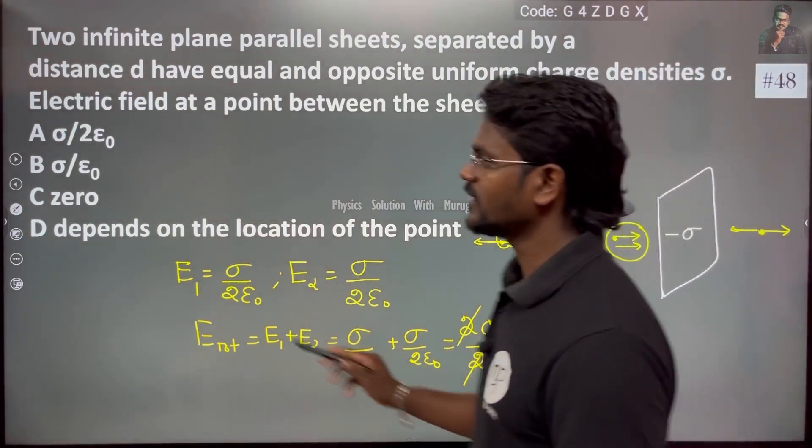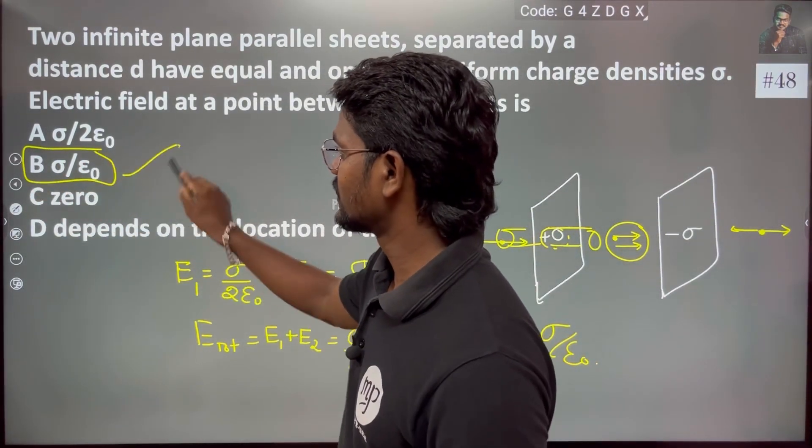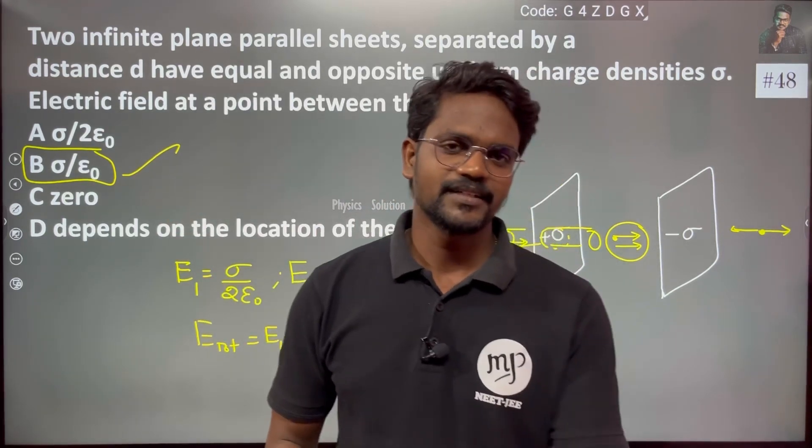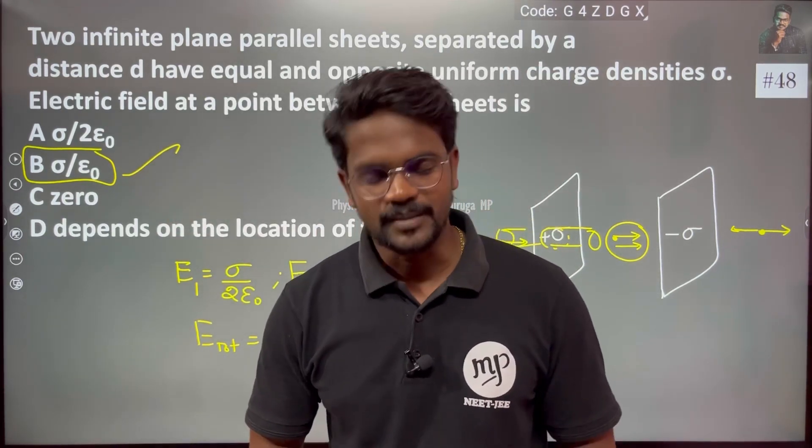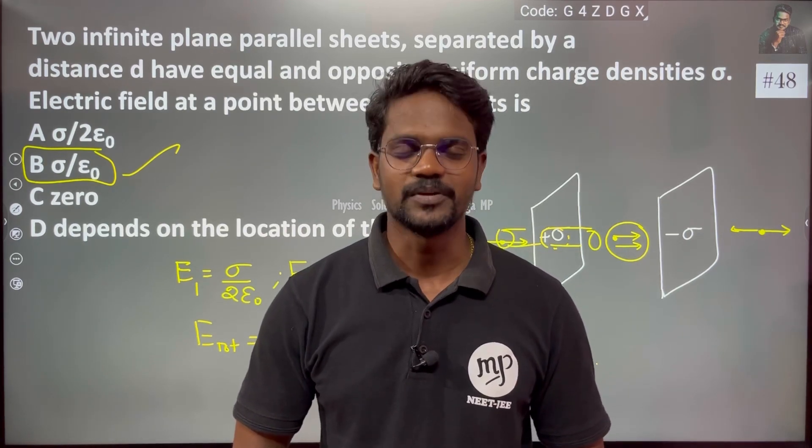Sigma by epsilon naught, so option B. Option B is the answer.